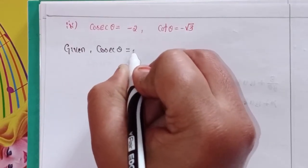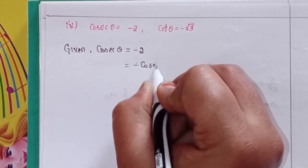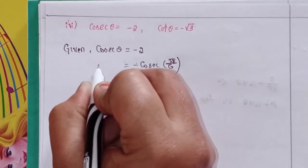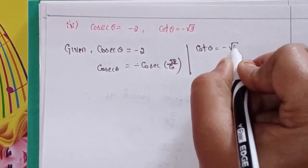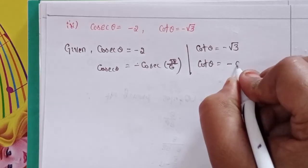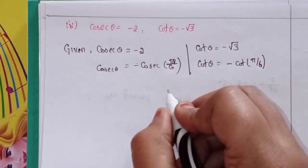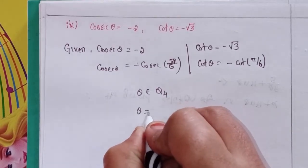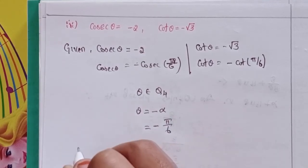Next, given: cosec θ = -2, that means cosec(π/6). And cot θ = -cot(π/6). Here both are negative, so theta belongs to the fourth quadrant, meaning theta equal to minus α, where α = π/6.